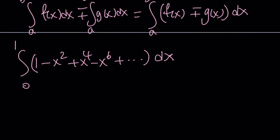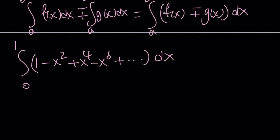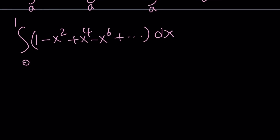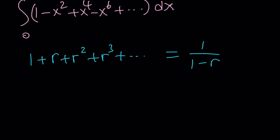Now, how is this helpful? We can consider this integrand as a geometric series — actually an infinite geometric series. The formula is 1 plus r plus r squared plus r cubed plus dot dot dot equals 1 over (1 minus r). Here, our series is different because r is negative x squared.